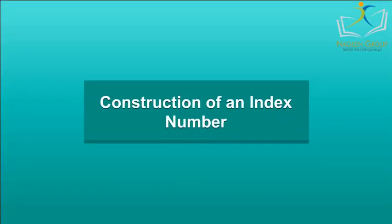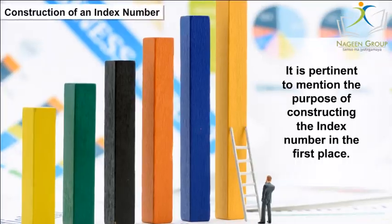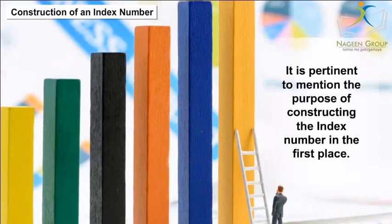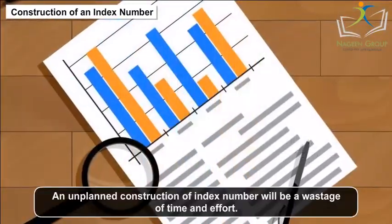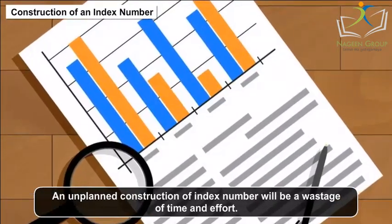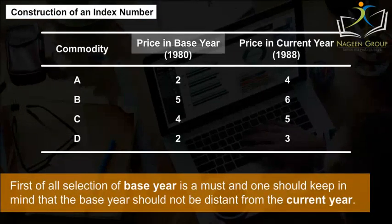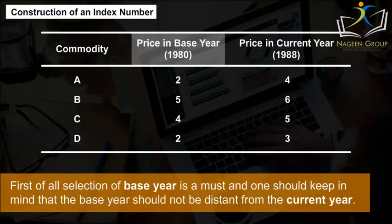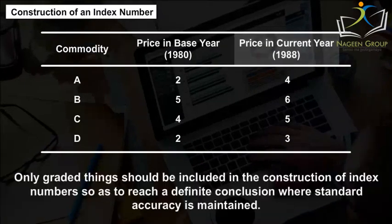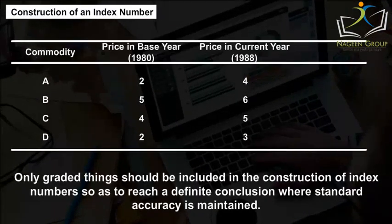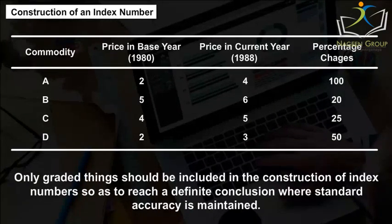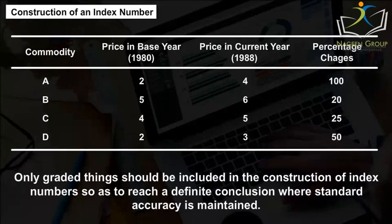Construction of an Index Number: It is pertinent to mention the purpose of constructing the index number in the first place. An unplanned construction of an index number will be a wastage of time and effort. Selection of the base year is a must, and one should keep in mind that the base year should not be distant from the current year. Only graded things should be included in the construction of index numbers so as to reach a definite conclusion where standard accuracy is maintained.